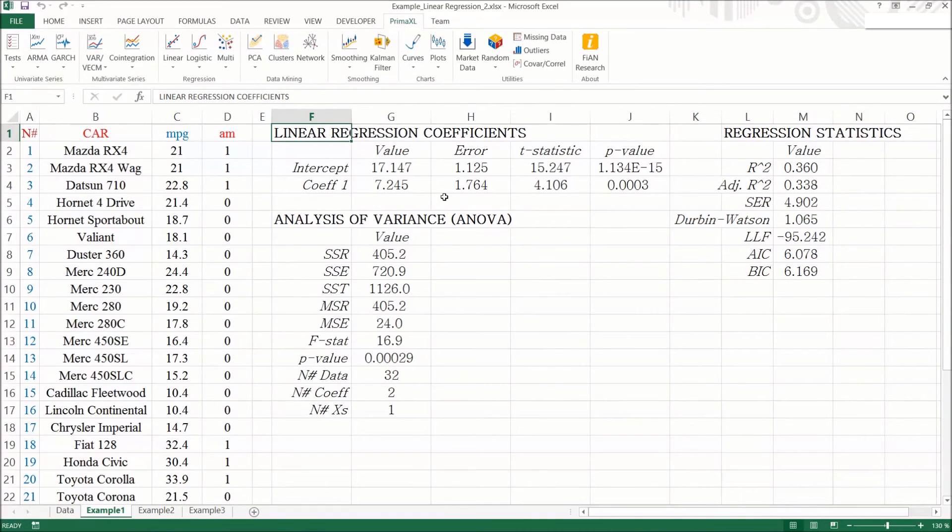As usual, we have the coefficients of the model. However, we have some more results corresponding to the diagnostics. For example, we have the R-square, SSR, SSE, SST, F-statistic, and its p-value, AIC and BIC.